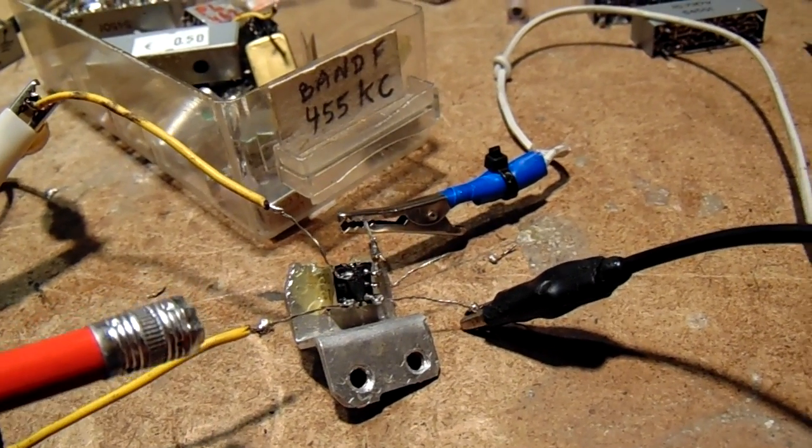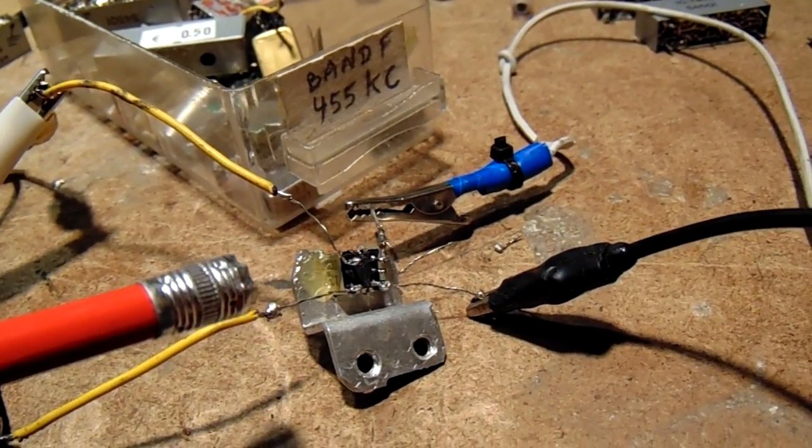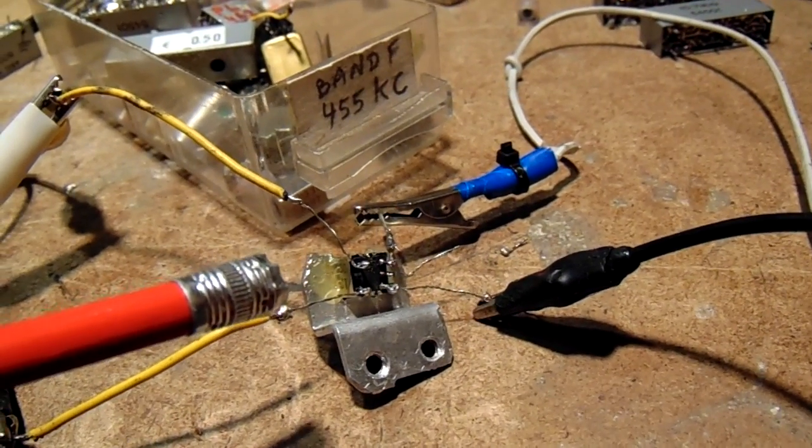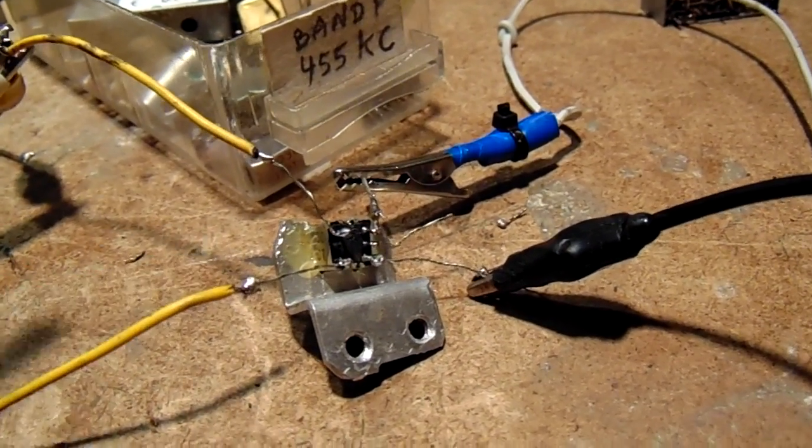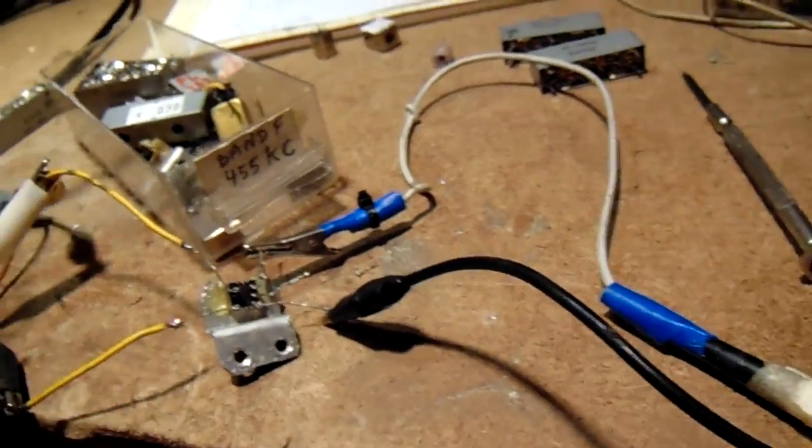So 455 kHz with a bandwidth of approximately 7 kHz. That's a normal bandwidth from an IF coil.